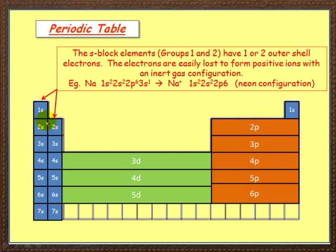The S-block elements, such as these here, let's ignore helium for now, have one or two outer shell electrons. Electrons are easily lost to form positive ions with inert gas configuration. So sodium is 1s2, 2s2, 2p6, 3s1. Now sodium is dead keen to lose this one. If it does so, it gains a positive charge. And then we have 1s2, 2s2, 2p6, which funnily enough is the same configuration as neon over here, atomic number 10.